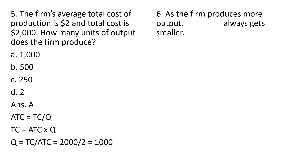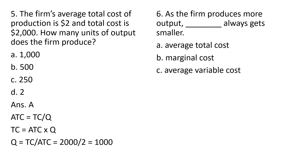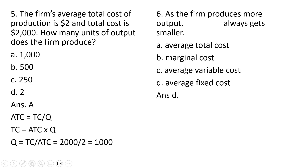Question six. As the firm produces more output, blank always gets smaller. That is going to be average fixed cost, answer choice D. The other answer choices — A, B, and C — could increase with output.